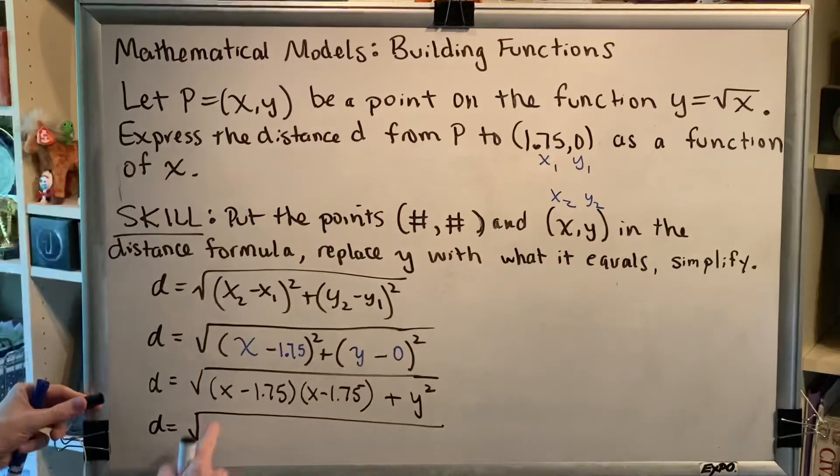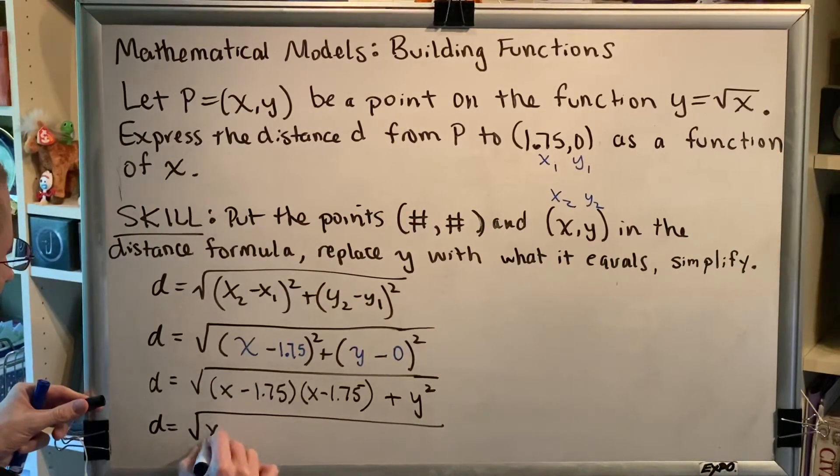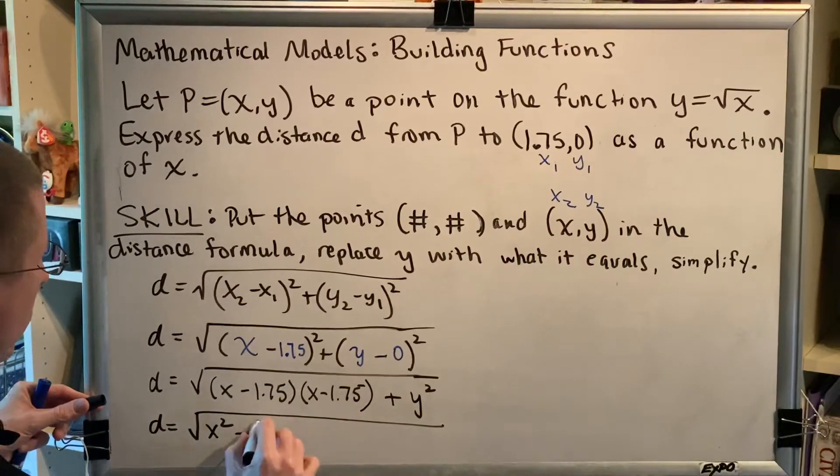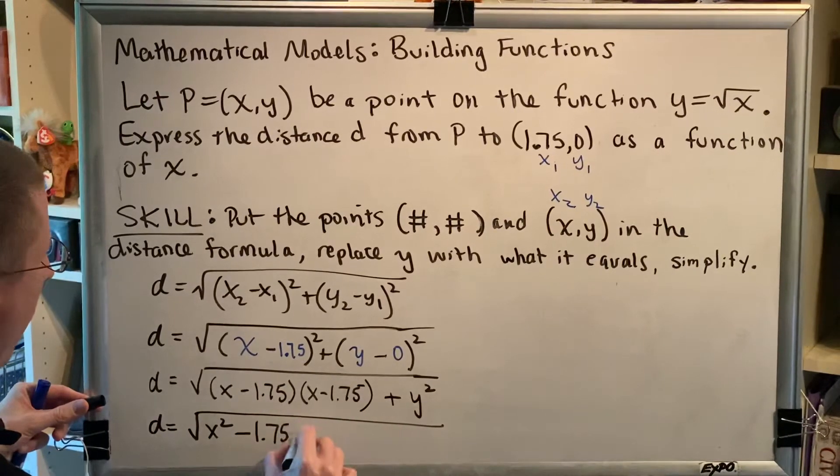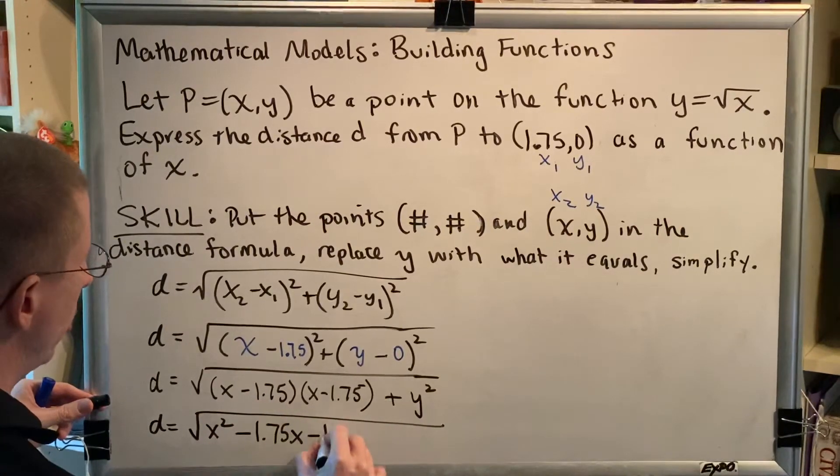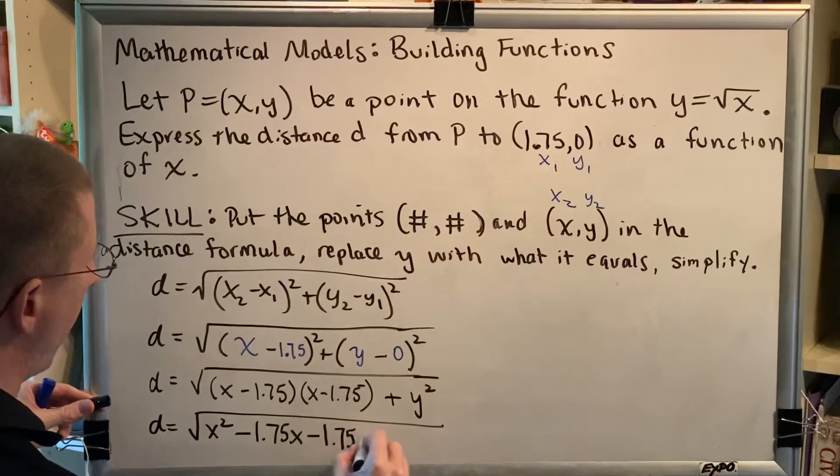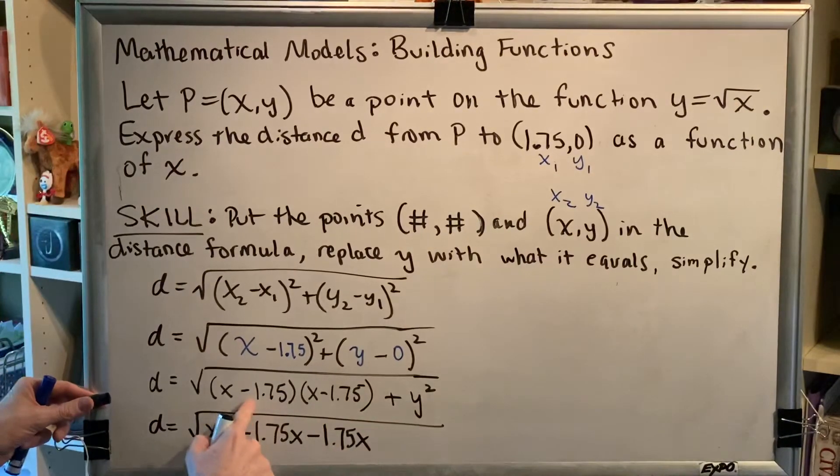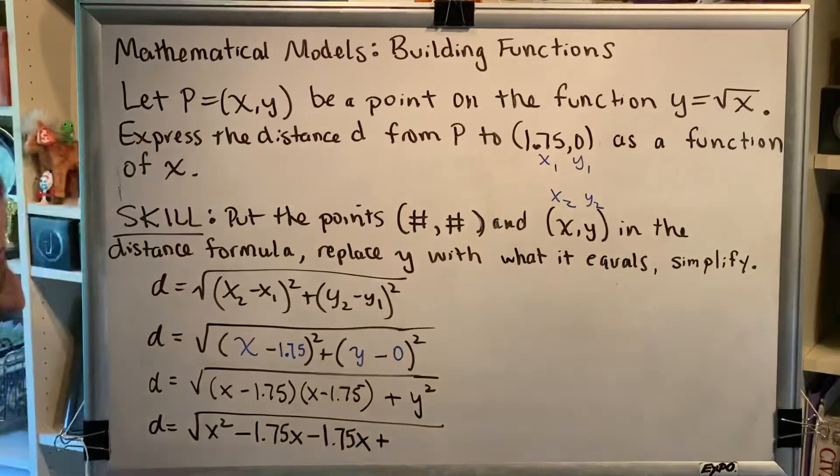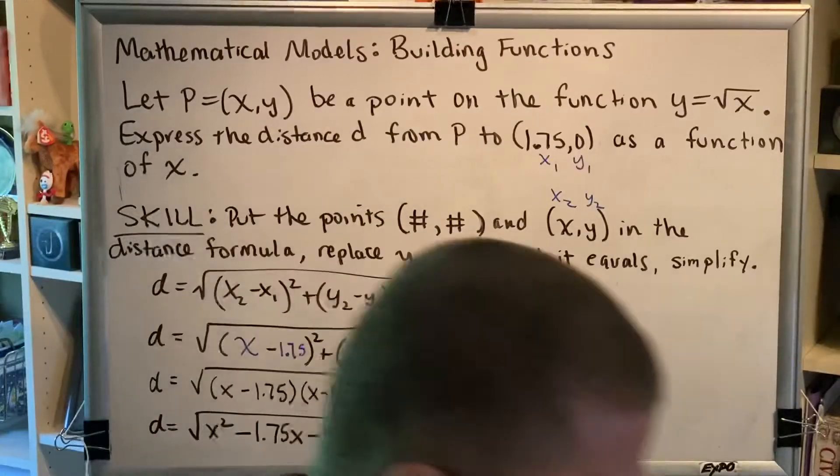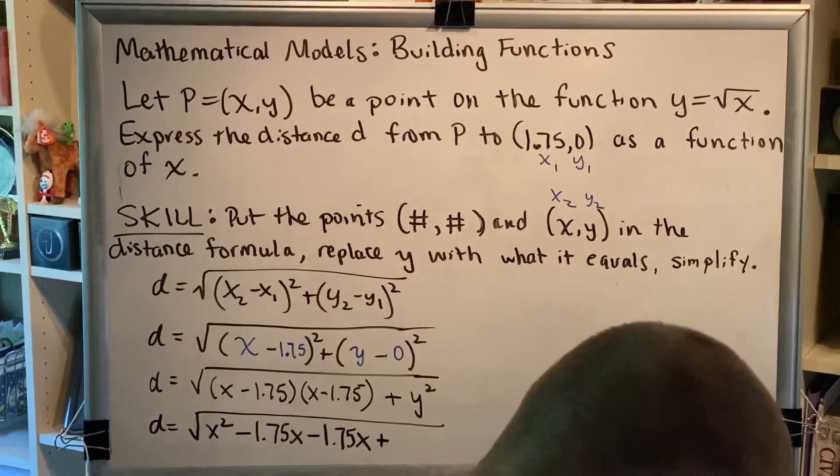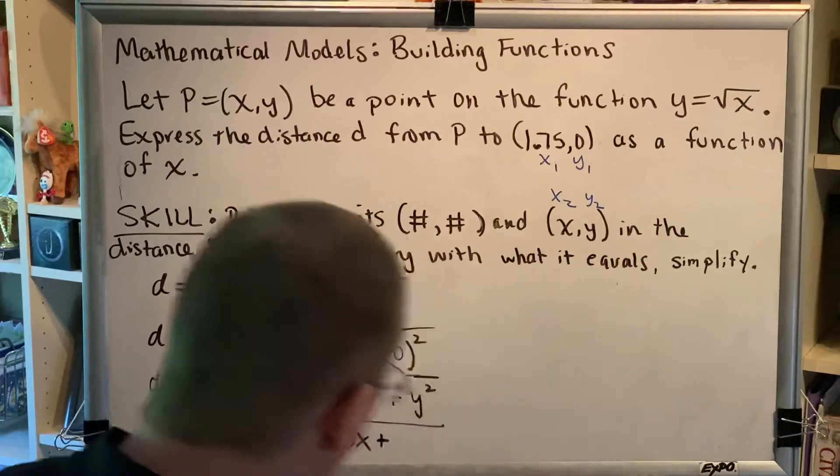First, let's do our FOIL. x times x, x². x times -1.75 makes -1.75x. -1.75 times x makes -1.75x. And -1.75 times -1.75 makes add something. And I'll pick up my calculator to determine what that is. So 1.75 times 1.75 is 3.0625.